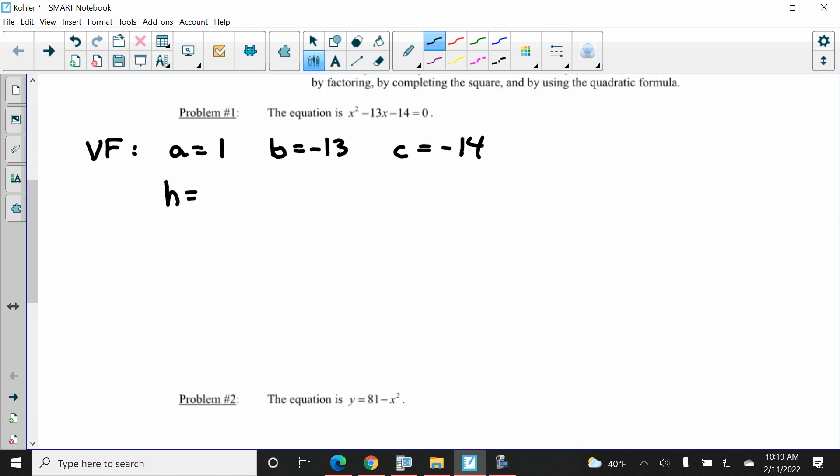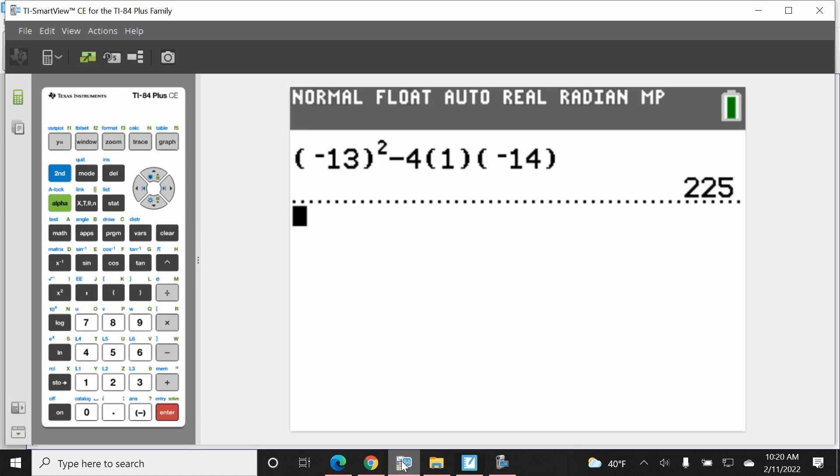of course, is the axis of symmetry, which is the opposite of B over 2 times A, which is 13 over 2 or 6.5. K is what you get when you plug in 6.5 into the problem. So since it's 1 for A, 6.5 squared minus 13 for B times 6.5 minus 14 for C. And we'll get K in one.